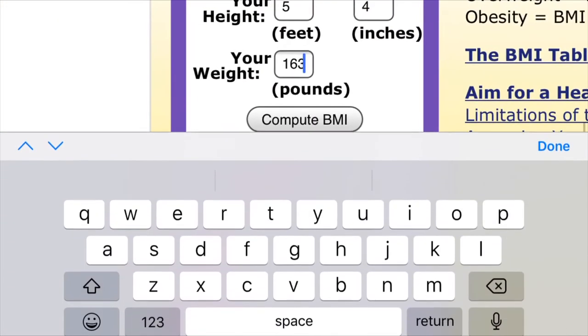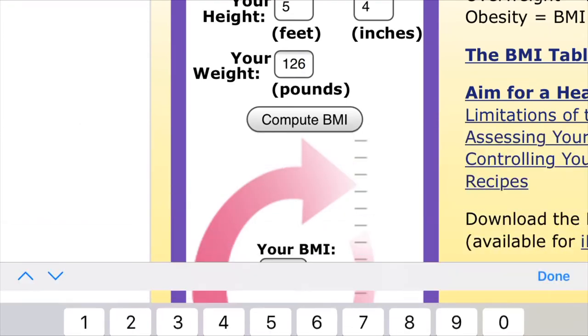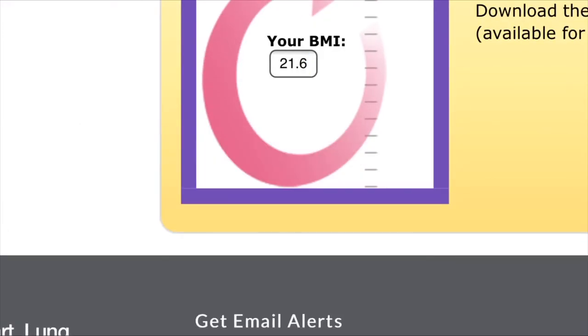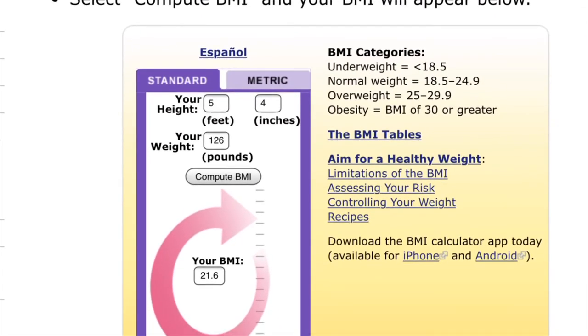Going back to that BMI calculator earlier, through countless trial and error, I have figured out that 126 pounds would give me the closest result to what I want, but I can't actually achieve this in just a month. So I'm looking at, by the end of 2020, I would be 126 pounds. And this is how I plan to do it.